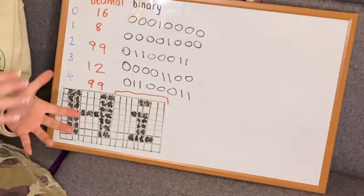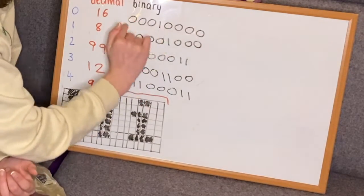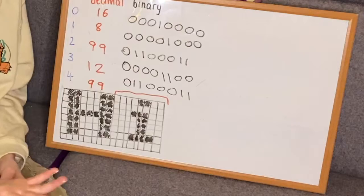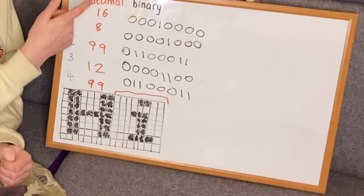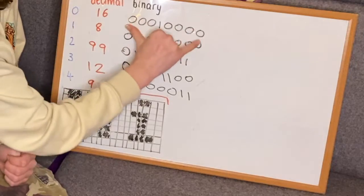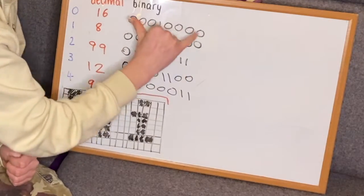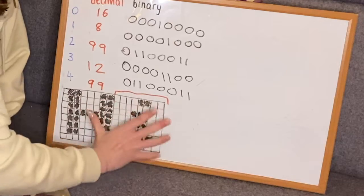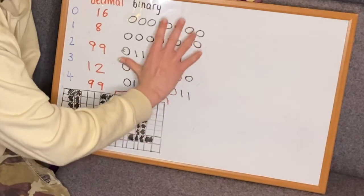A quick note: the highest value that can be represented by eight bits, or a byte, is 255. So if your image's width or height exceeds 255, you may want to use two bytes instead of one. This process keeps going until your full image has been converted to an array of binary numbers.